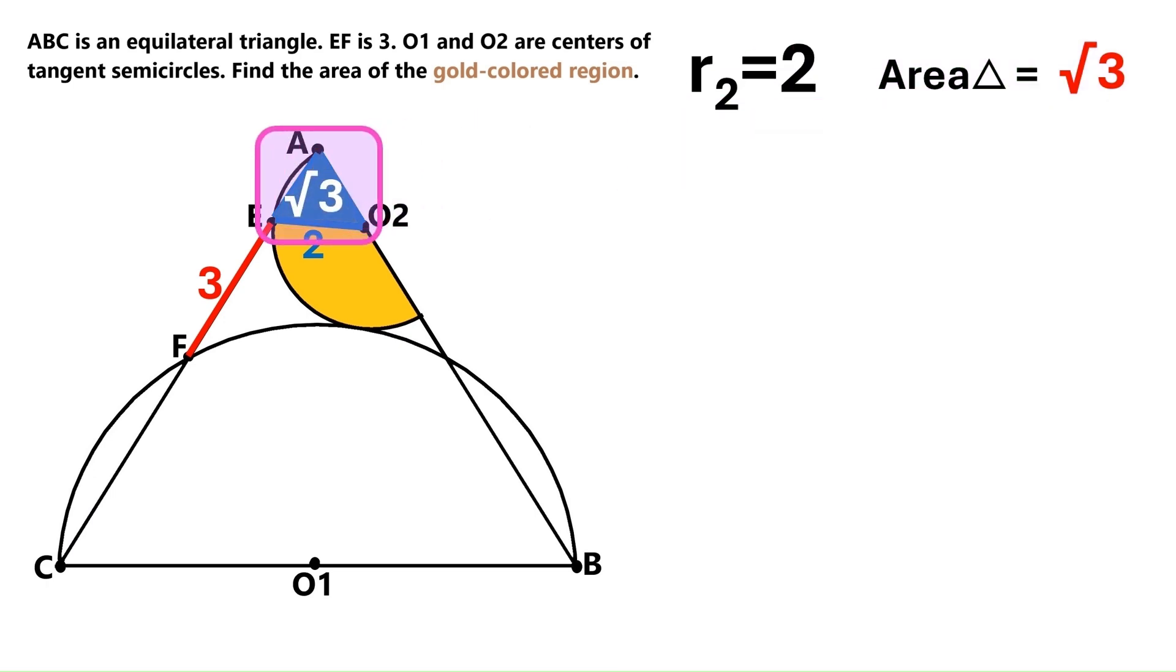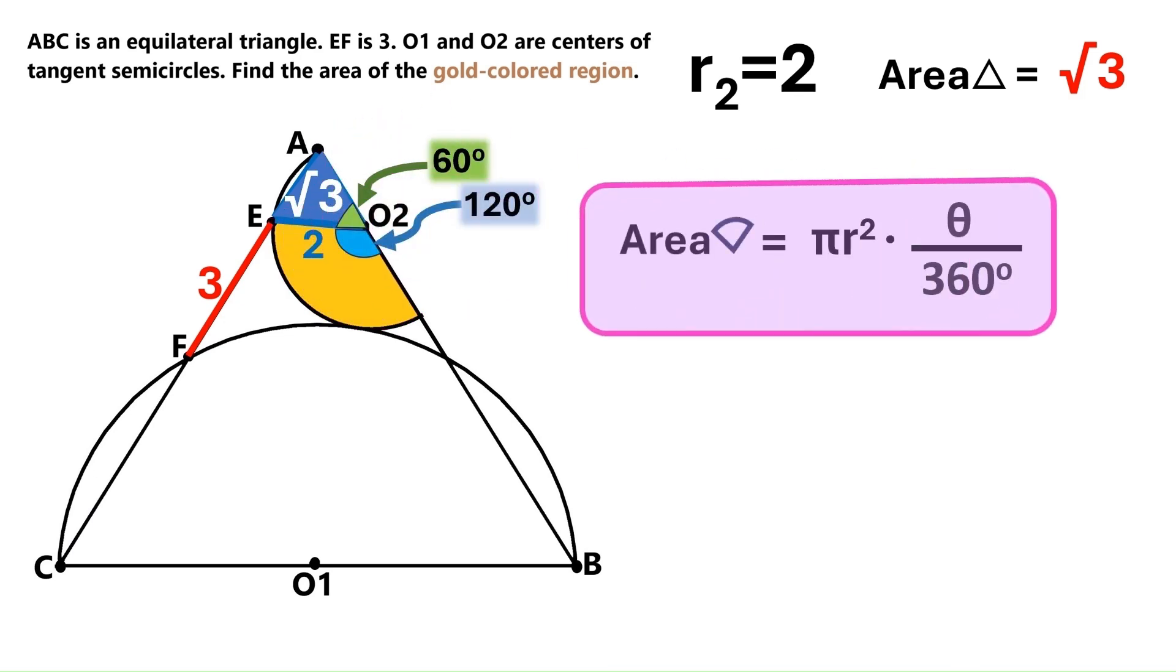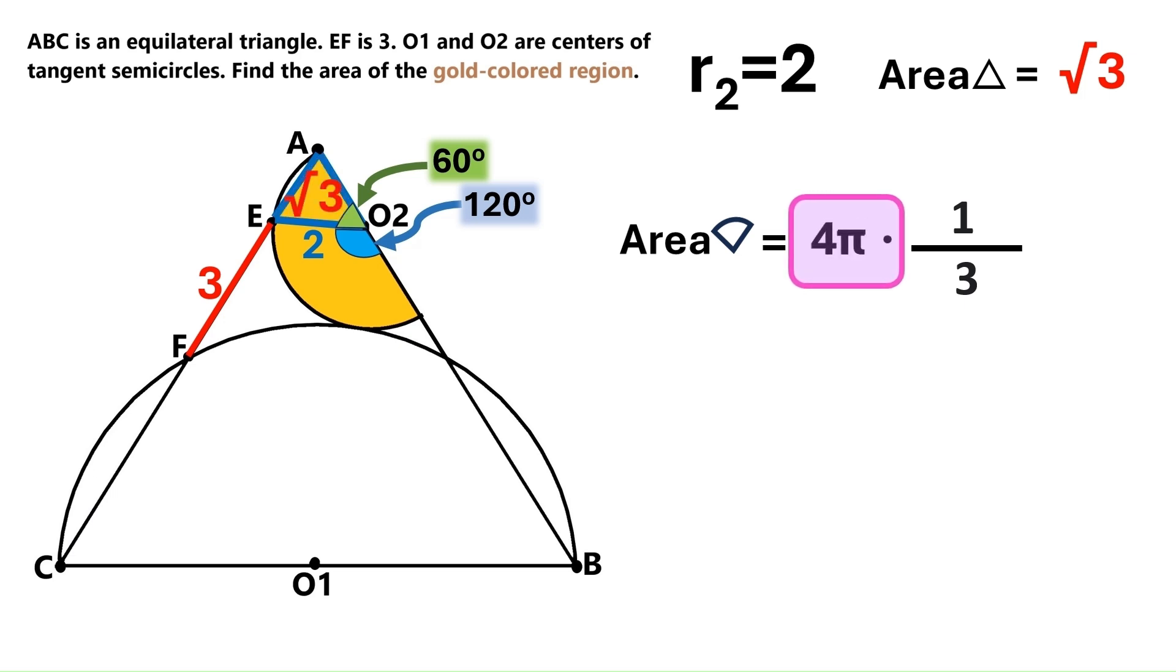And now we'll do this circular sector. We know this angle is 60 degrees. So its supplementary angle must be 120 degrees. This is the formula for the area of a circle's sector. This theta is the sector's angle. So let's put 120 here. This fraction simplifies to 1 over 3. R is 2, so this becomes 2 squared, which equals 4. And the area of the sector turns out to be 4 pi over 3.